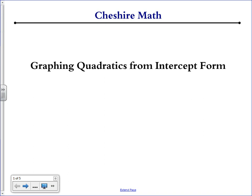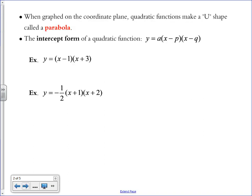This video is about graphing quadratics from intercept form. When you graph a quadratic function, it's still going to make a U shape called a parabola on the graph.